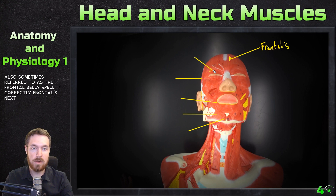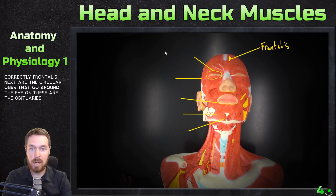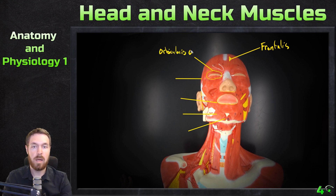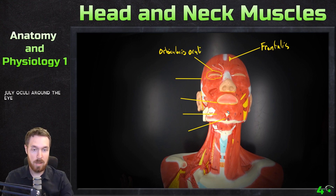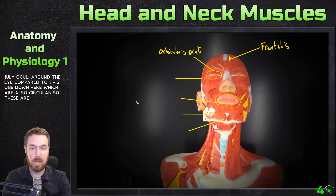Next are the circular ones that go around the eye. These are the orbicularis oculi — oculi, around the eye. Compared to this one down here, which are also circular — these are the orbicularis oris.